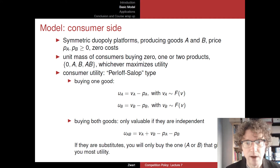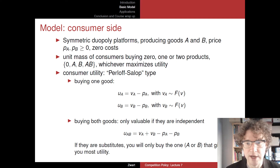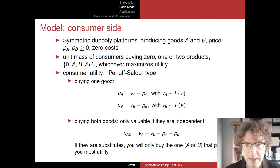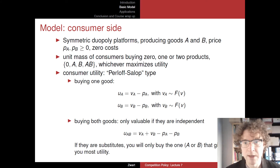If the goods are independent — like search and buying something on the internet, for instance — then you might buy both goods. If they are independent, you can add up the two utilities: VA minus PA plus VB minus PB. That's your total utility from consuming both goods. If both net utilities are positive, you will be willing to buy both goods, provided the goods are independent.